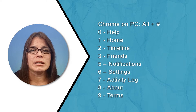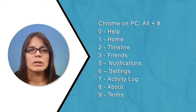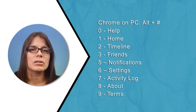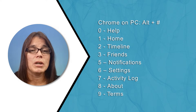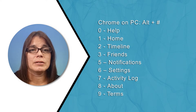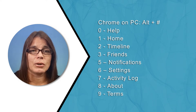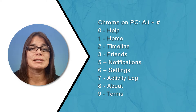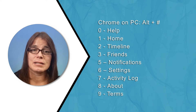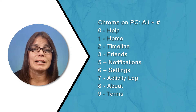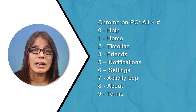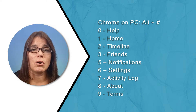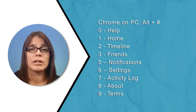So with the Alt key: zero goes to Help, one goes Home, two goes to Timeline, three goes to Friends, five goes to Notifications, six goes to Settings, seven goes to Activity Log, eight goes to About, and nine goes to Terms. All of those are used with the Alt key.